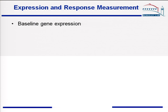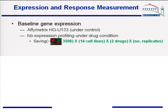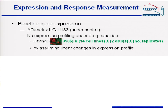Second, we measure the gene expression data using a microarray, only under the baseline condition, but not under the drug condition. This experimental design is to save the experimental cost. Nowadays, gene expression profiling for a single experiment takes about $400 to $600, and this has to be further multiplied by the number of cell lines, number of drugs, and number of replicates. This reduction of cost is achieved by assuming linear changes in the gene expression profile.